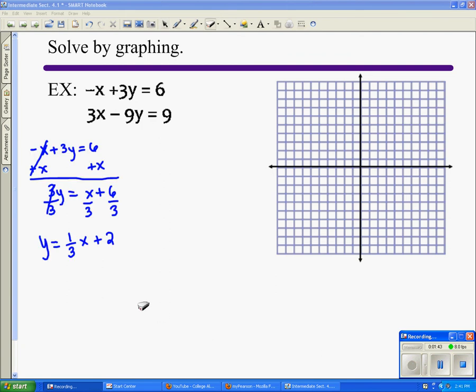My first equation when I solve for y, I get y equals one third x plus two. My slope is one third, and my y-intercept is the ordered pair zero, two. My b is two, so it's the ordered pair zero, two. I'm going to go ahead and graph that. You start at your y-intercept, zero, two, which is here.